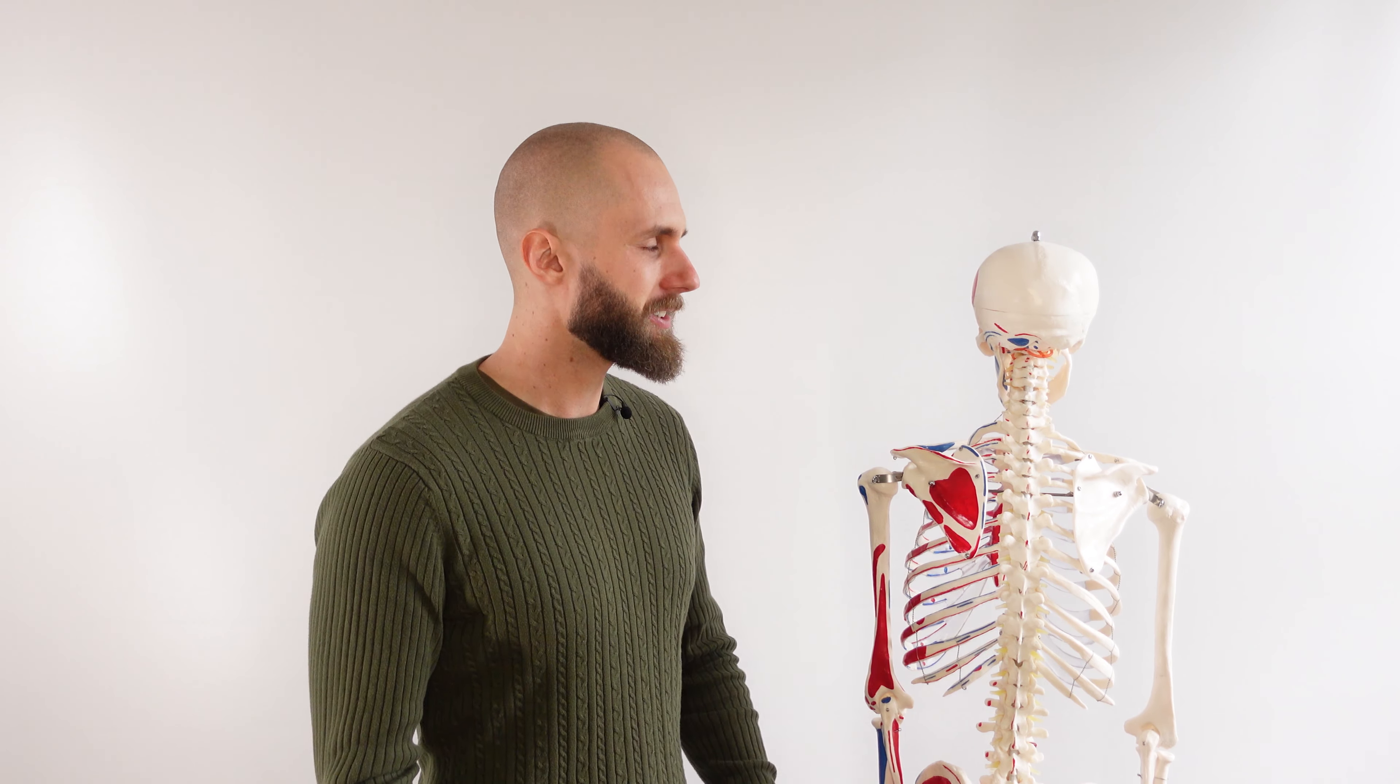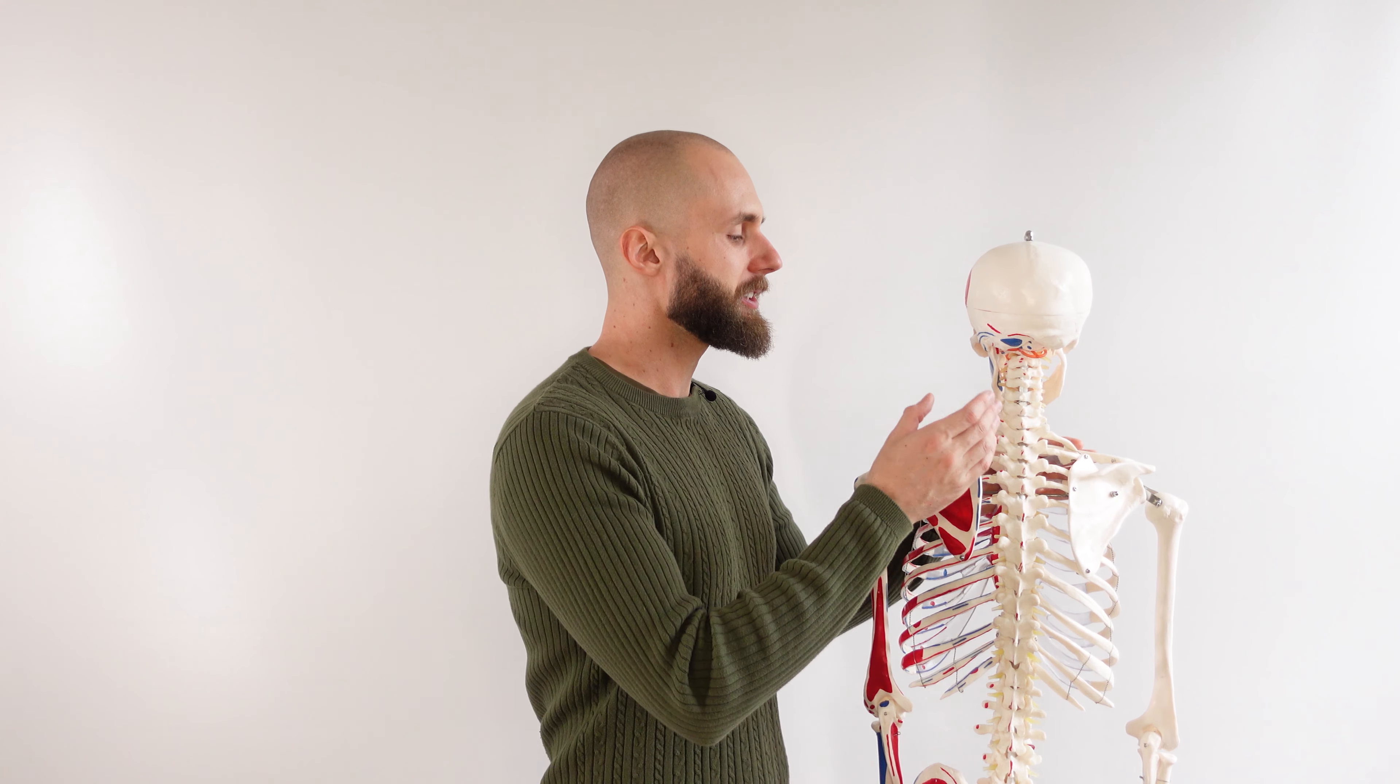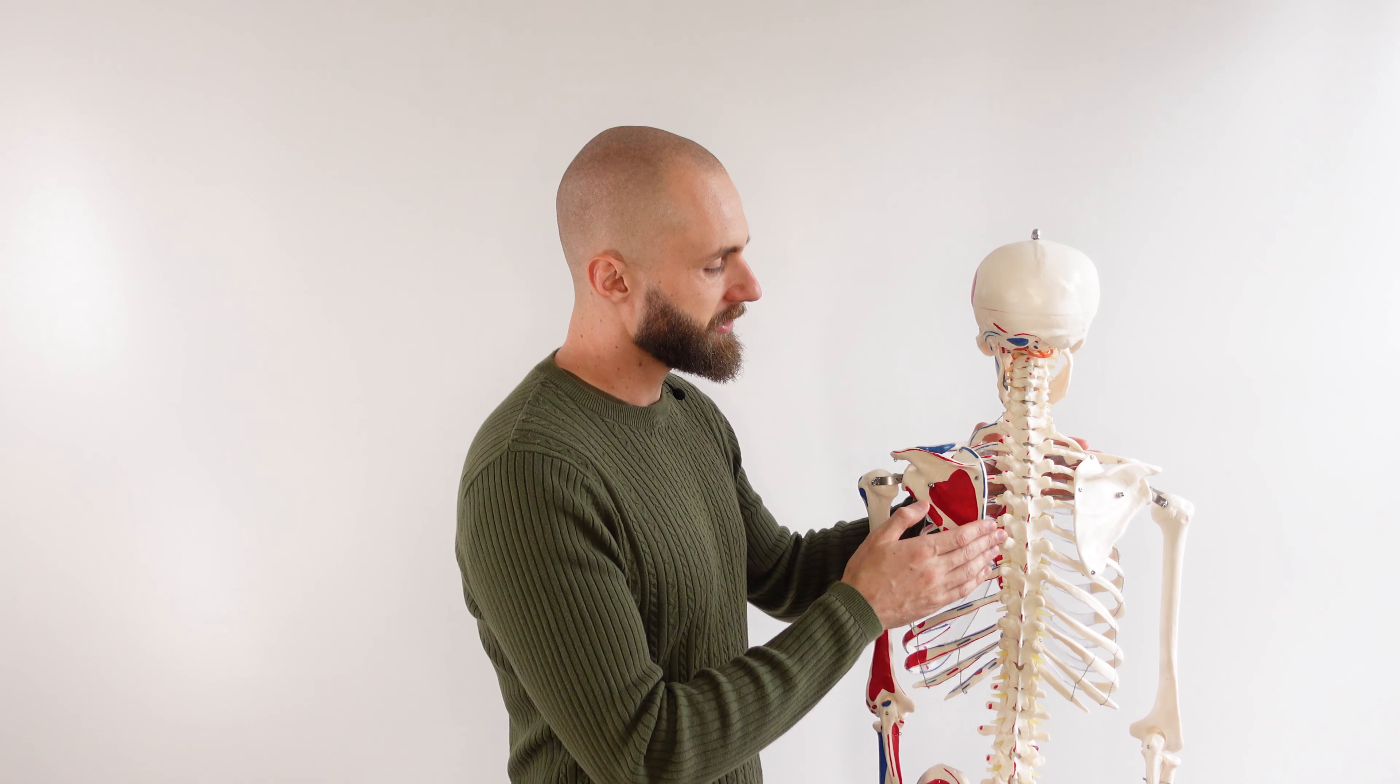So we're back here again with the skeleton model and you can see the origin of the rhomboid major muscle here on T2 to T5 of the spinous processes of the vertebrae. You can see the insertion here on the medial border of the scapula.